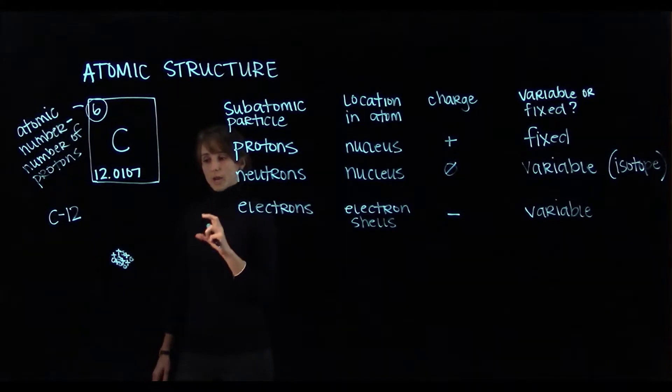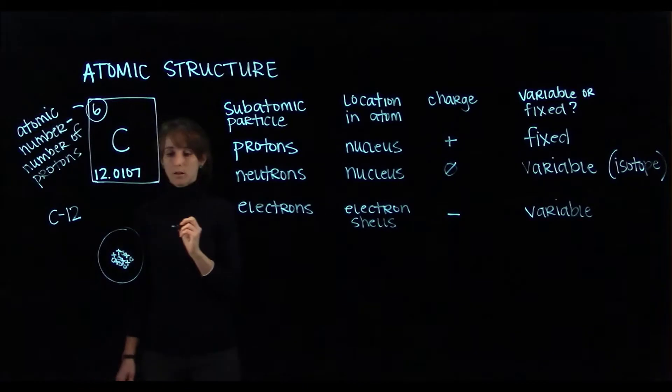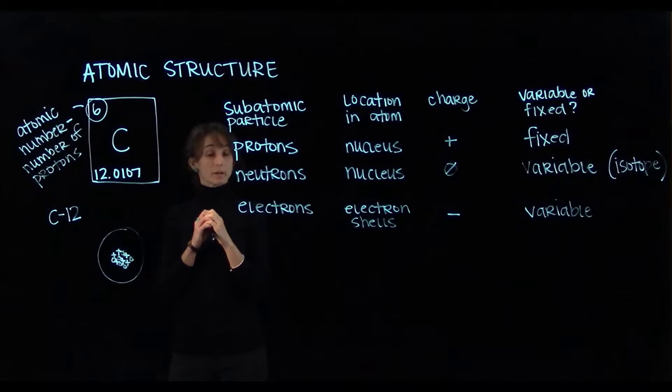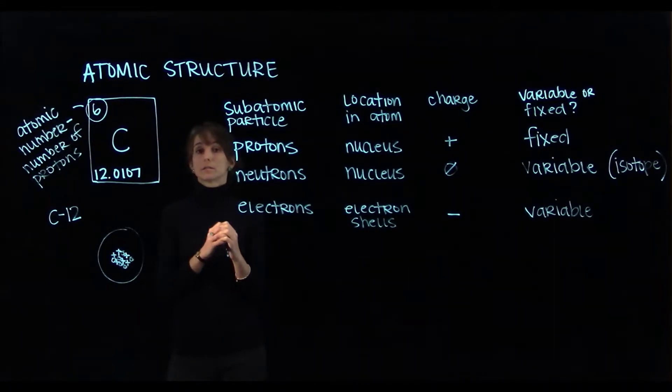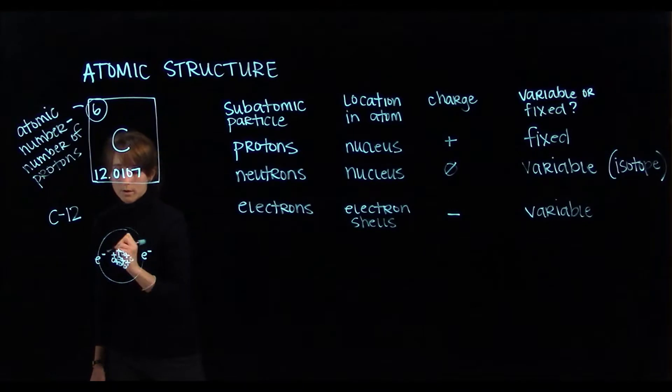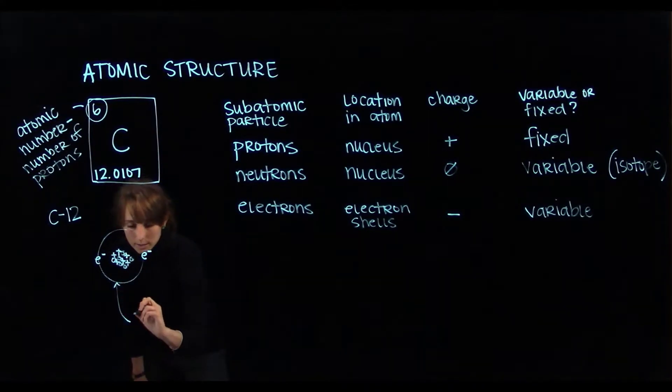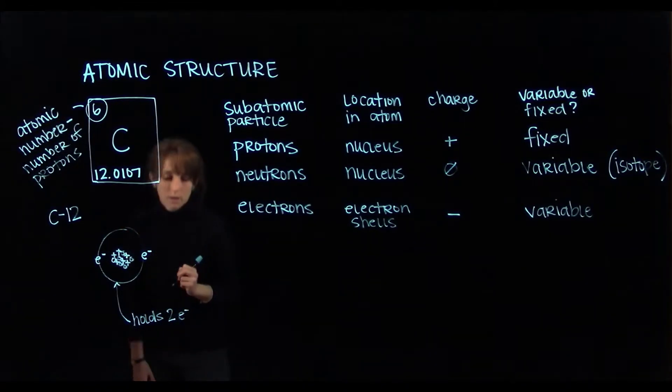When we assign locations for the electrons, we first put them in a small shell that is relatively close to the nucleus. That first shell is very small, so it can only hold two electrons. We are going to give our carbon atom six electrons to match the number of protons. So I'm going to draw those first two as a small letter e with a negative sign, and then another one on the other side. And just make a note to remind us that that first shell holds two electrons.